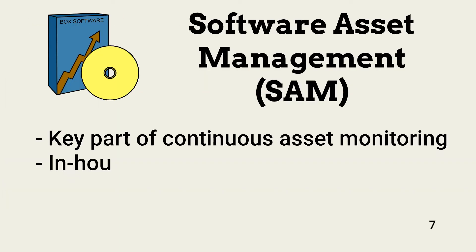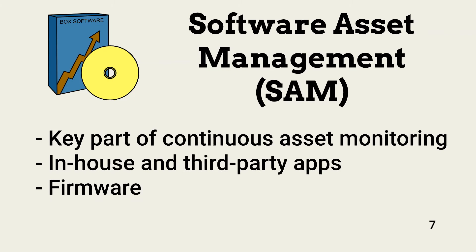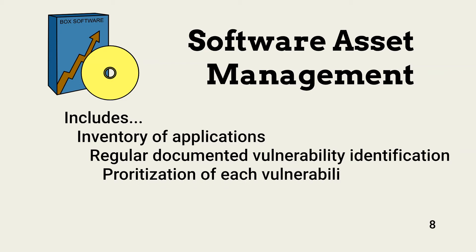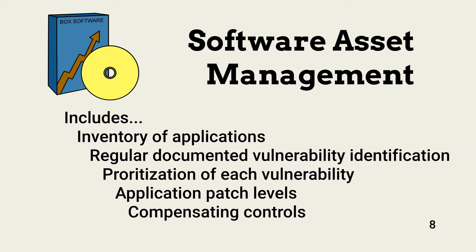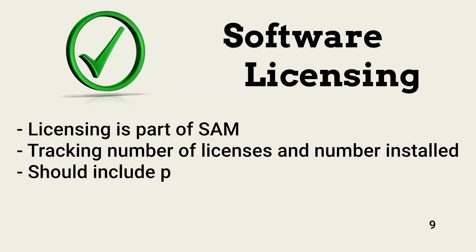Software asset management, or SAM, is part of continuous asset monitoring. It includes applications written by the organization or purchased from third parties, as well as system and IoT firmware. SAM includes maintaining an application inventory to understand associated risks. Management of each application requires vulnerability scans, a required review of announced vulnerabilities, and associated threat modeling, with each vulnerability needing prioritization. SAM documentation must also include current patch levels and any compensating controls used to manage unpatched vulnerability risk.